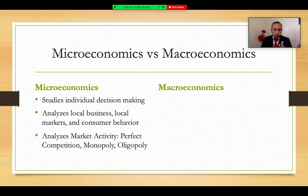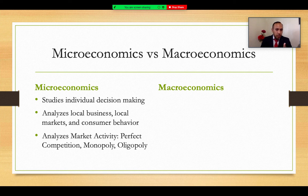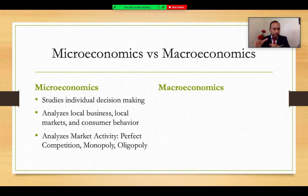Microeconomics analyzes local business, local markets, consumer behavior, and consumers buying goods and services. We can analyze market activity — whether markets are perfectly competitive, a monopoly structure dominated by one firm, or oligopoly where there's less competition. It emphasizes mainly on individual decision making and optimizing those decisions.